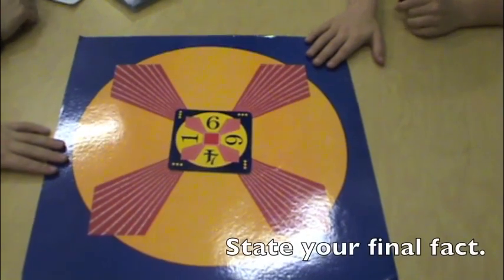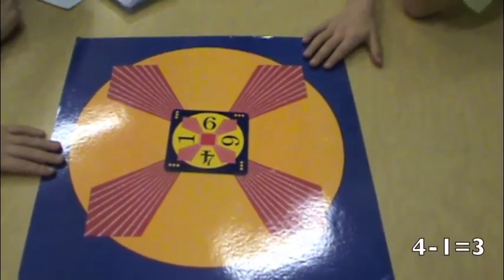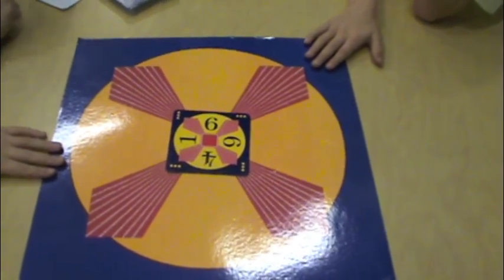Final fact. 18 plus 6 equals 24. 4 minus 1 equals 3. 6 times 3 equals 18. And 18 plus 6 equals 24.